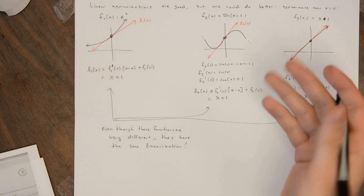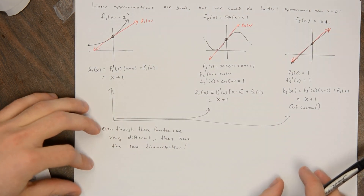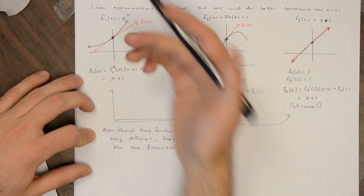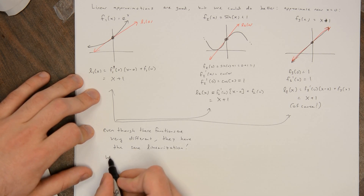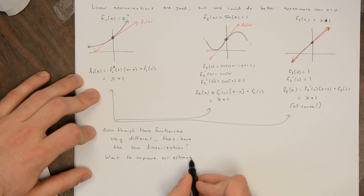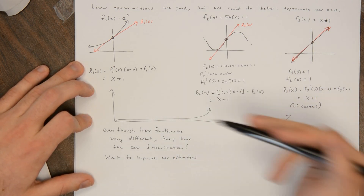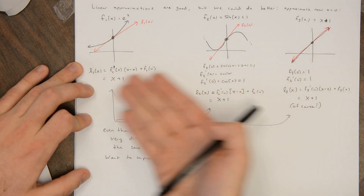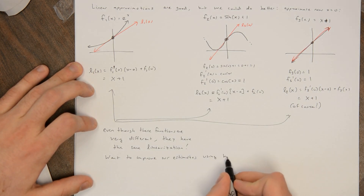So we'd like to find an approximation that's a little bit better — one that could tell the difference between e^x, sin(x) + 1, and x + 1, and get better estimates of e^0.1, sin(0.1) + 1, and 1.1. We want to improve our estimates, but we don't want to actually use the exponential function or sine. We want easy functions, but something one step more complicated than linear — a quadratic function, a polynomial of degree 2 as opposed to degree 1. So we want to use higher degree polynomials.